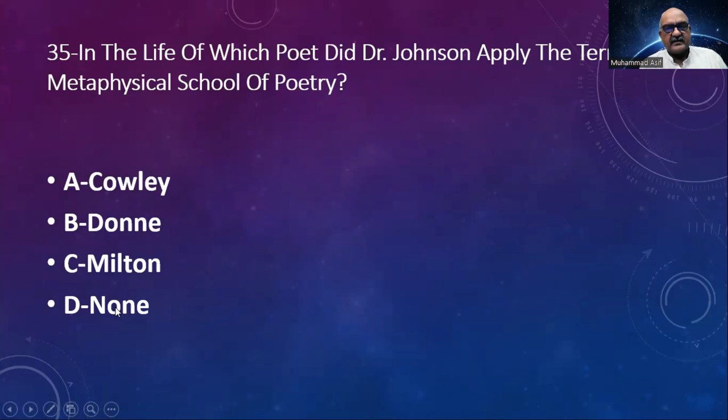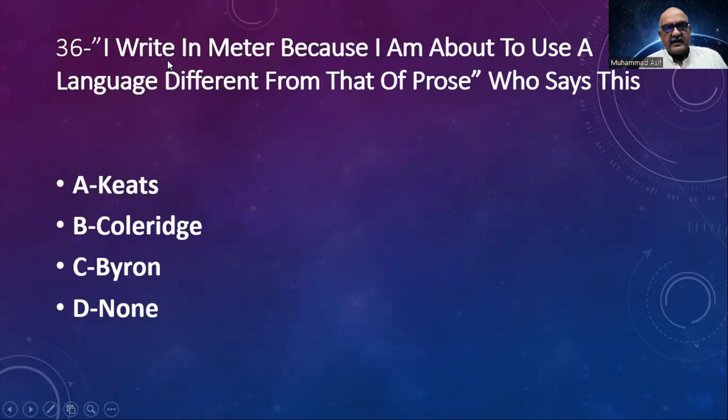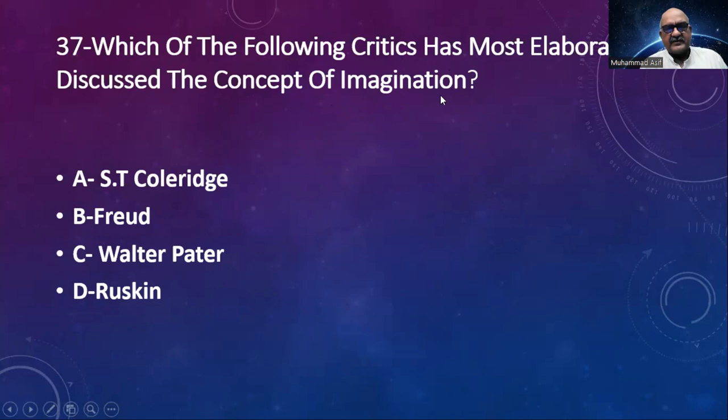Number 36: 'I write in meter because I am about to use a language different from that of prose.' Who says this? Options: Keats, Coleridge, Byron, none. The answer is Keats. Number 37: Which of the following critics has most elaborately discussed the concept of imagination? Options: Coleridge, Fry, Walter Pater, Ruskin. The answer is Coleridge. Coleridge is famous for the two terms imagination and fancy.